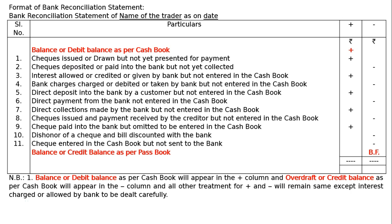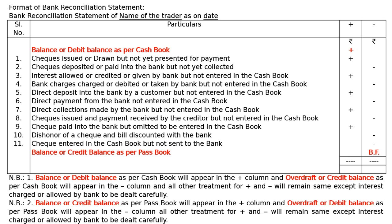In the case of overdraft, the same method is followed — plus is plus and minus is minus — but you must be cautious about interest charged by the bank, as it may be charged rather than allowed. Note two: a credit balance as per pass book appears in the plus column and an overdraft or debit balance as per pass book appears in the minus column. All other treatments remain the same. Also remember: if you are going from pass book balance to cash book balance, added items will be deducted and deducted items will be added.